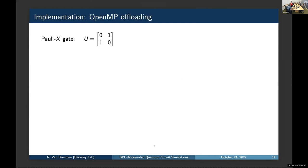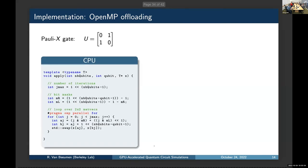So, now let's look at the implementation. We have implemented everything in C++, modern C++, through OpenMP offloading. And I'm going to use, for this example, the Pauli X gate, which is just a simple swap operation.